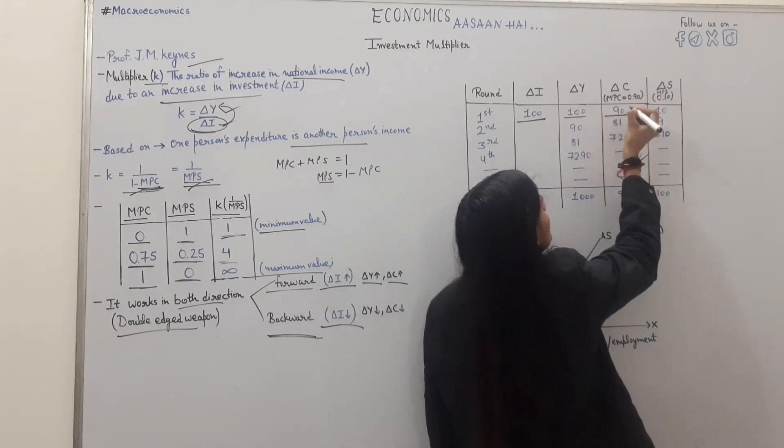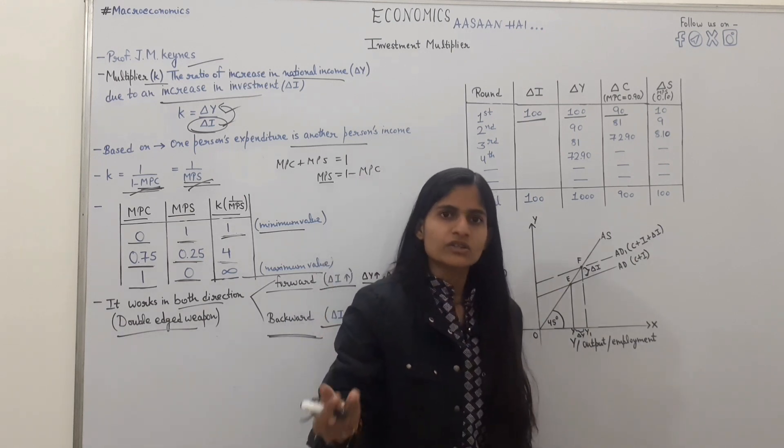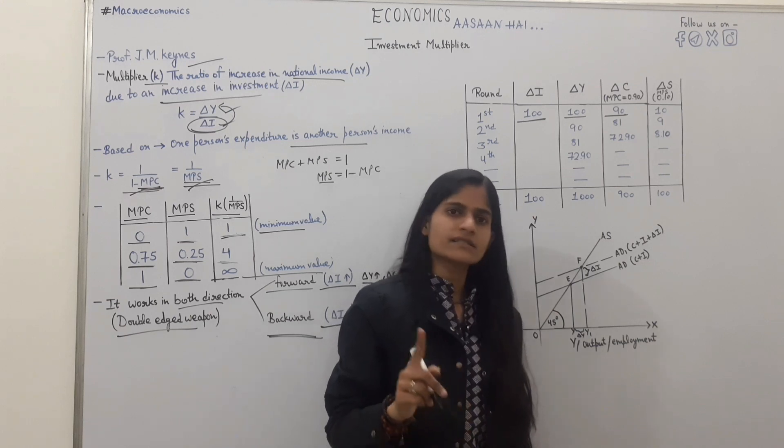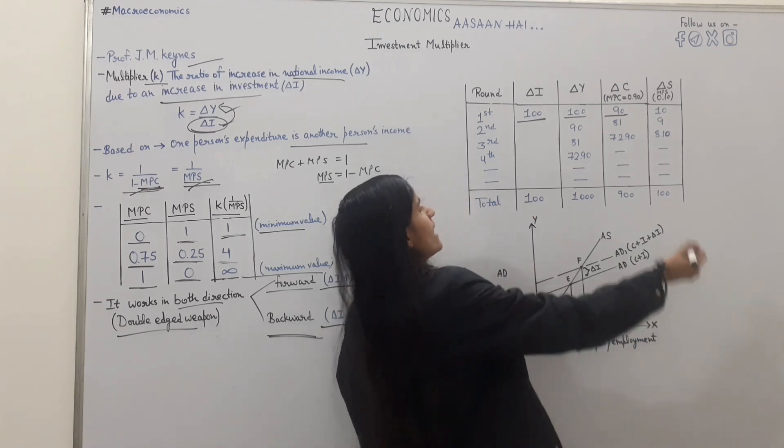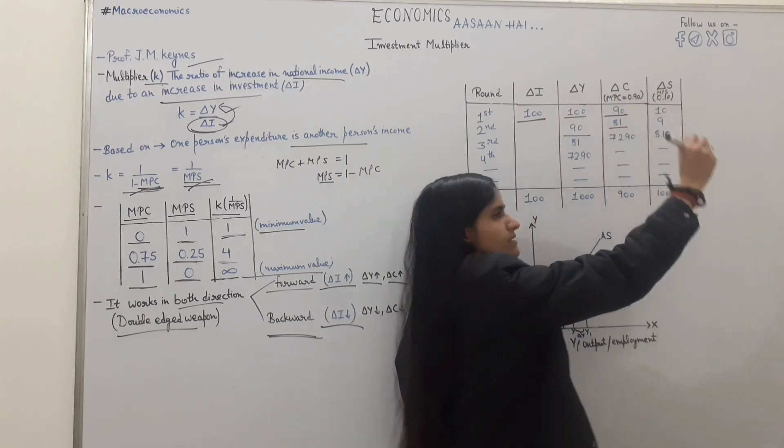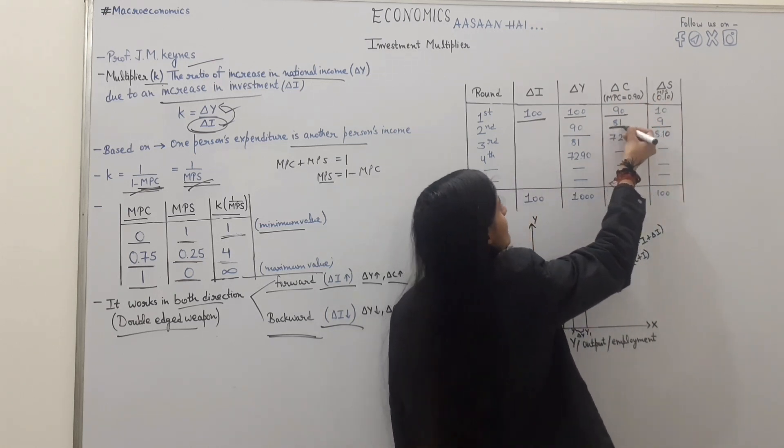If this is 100 income, 100 income is 90 consume, if consumer is 90 percent of income. Then 90 again is 90 percent. Consume 81 or savings 9. Again 90 percent. Consume or savings 18.